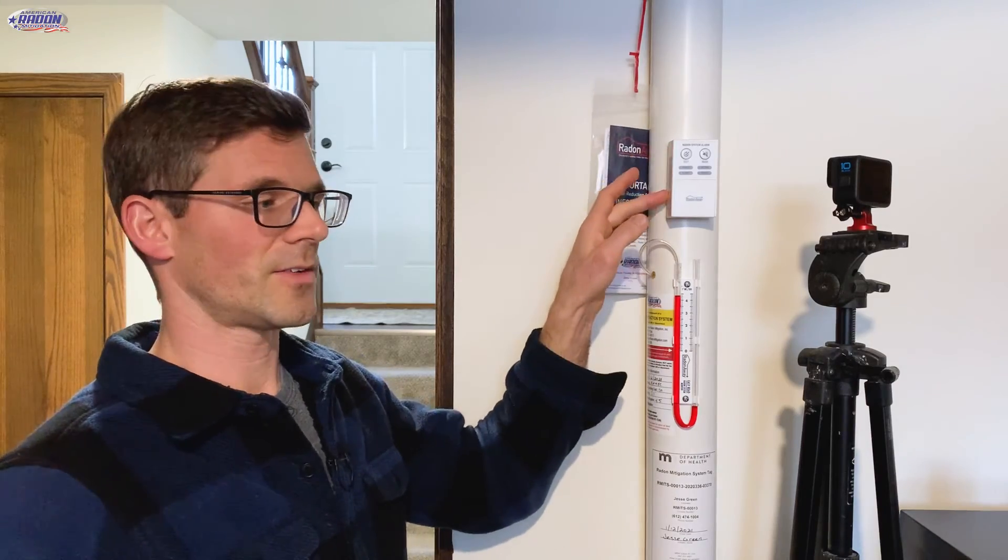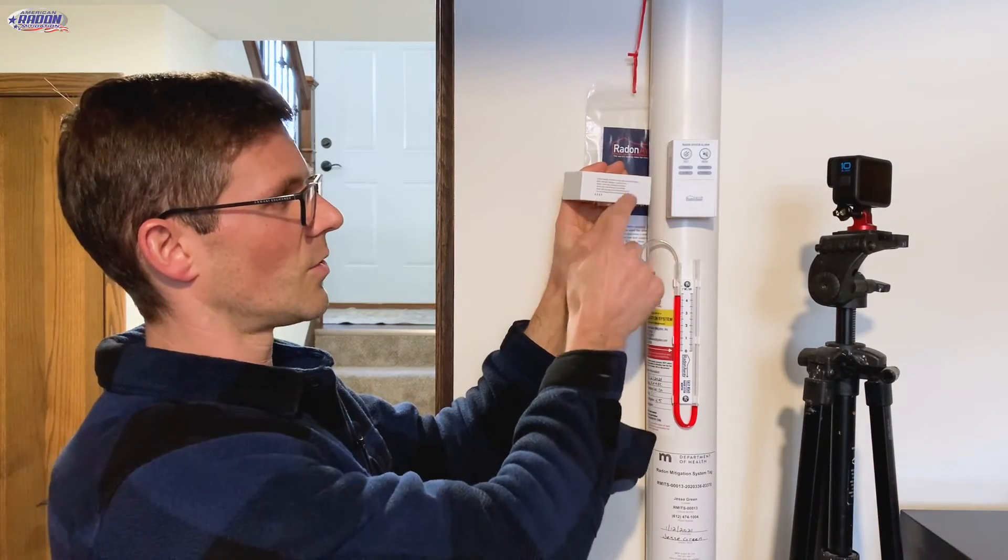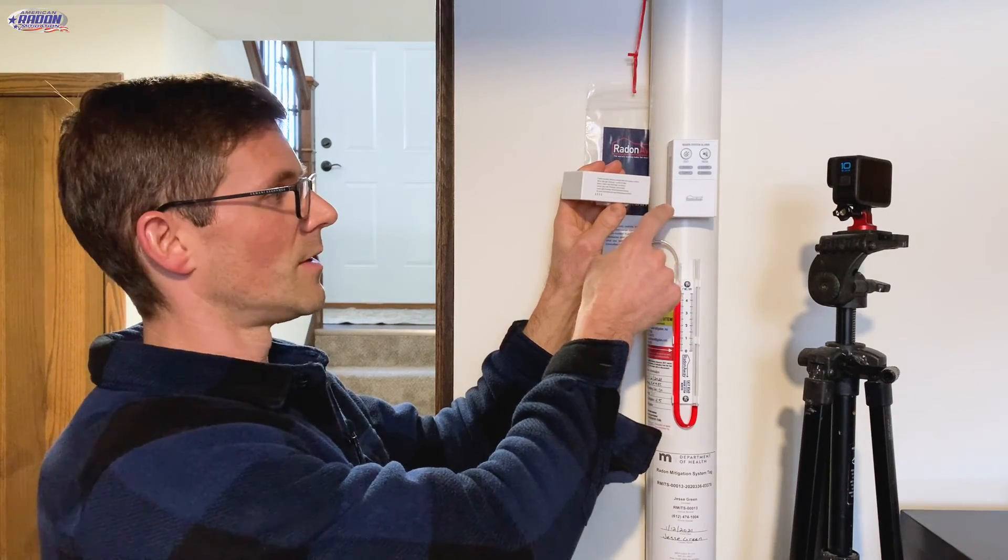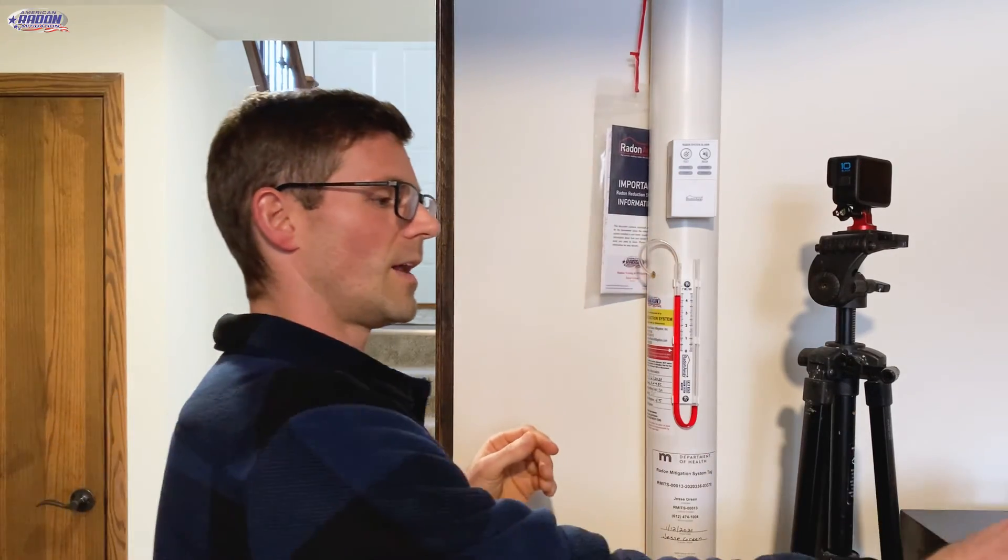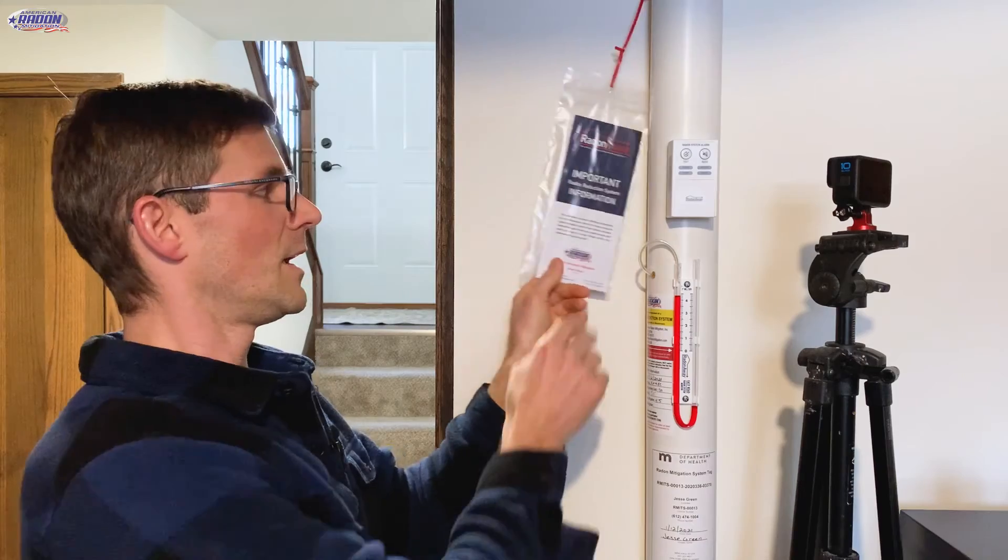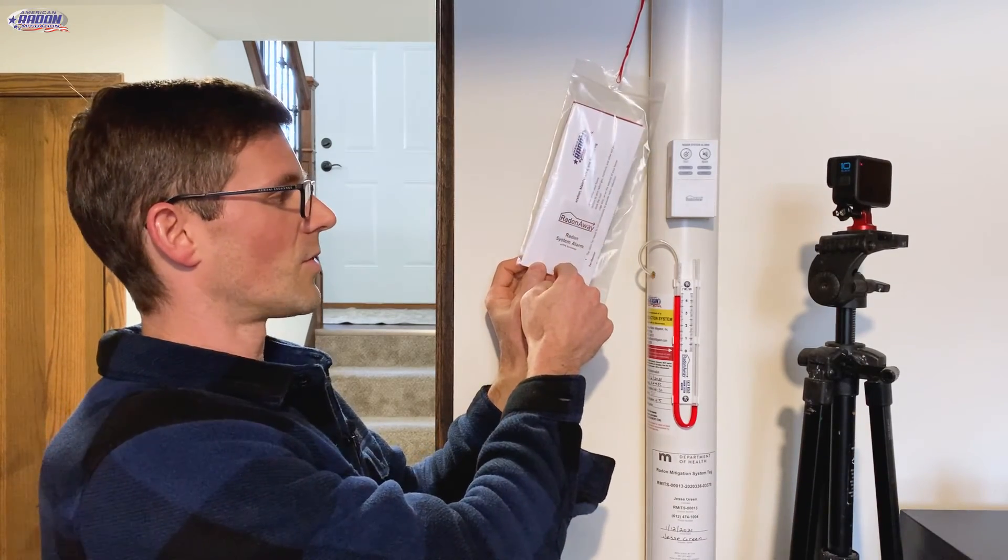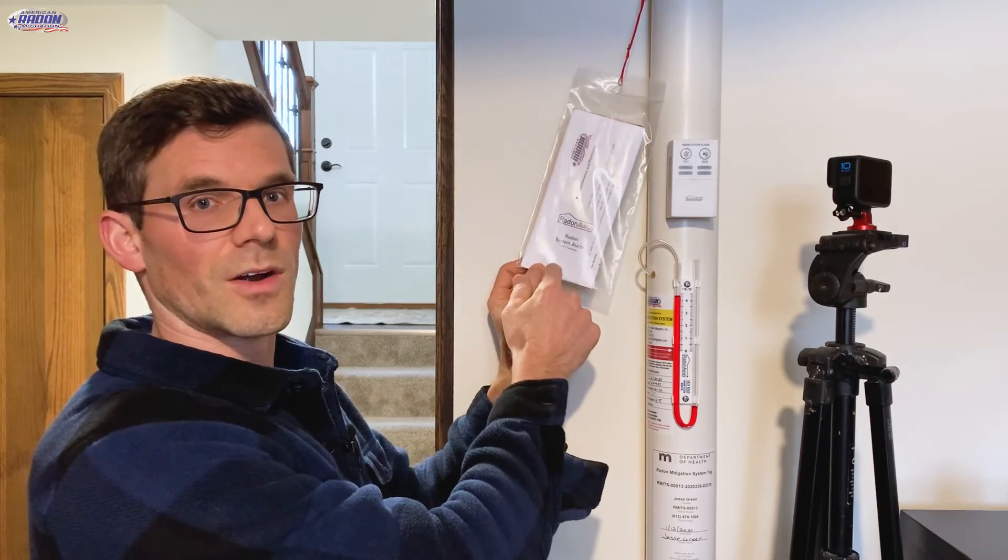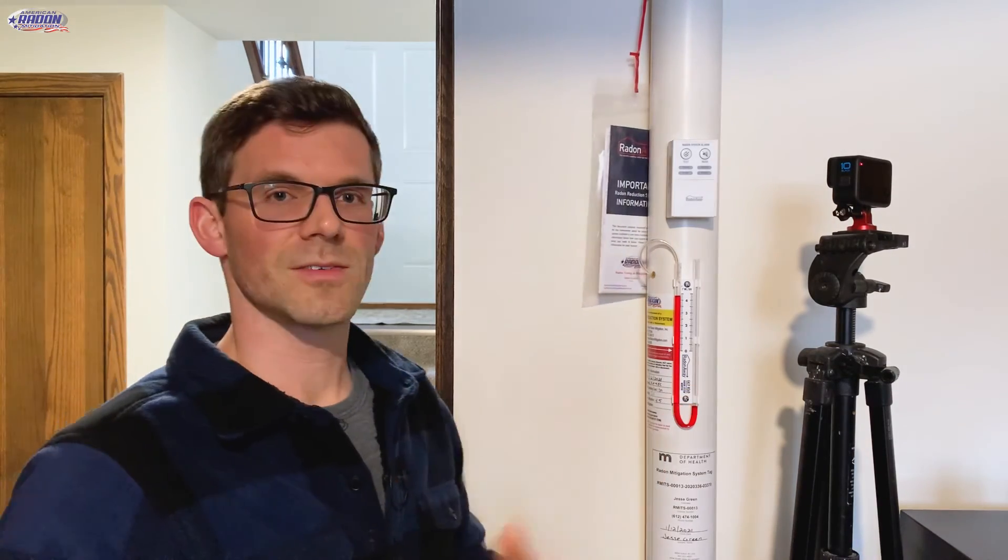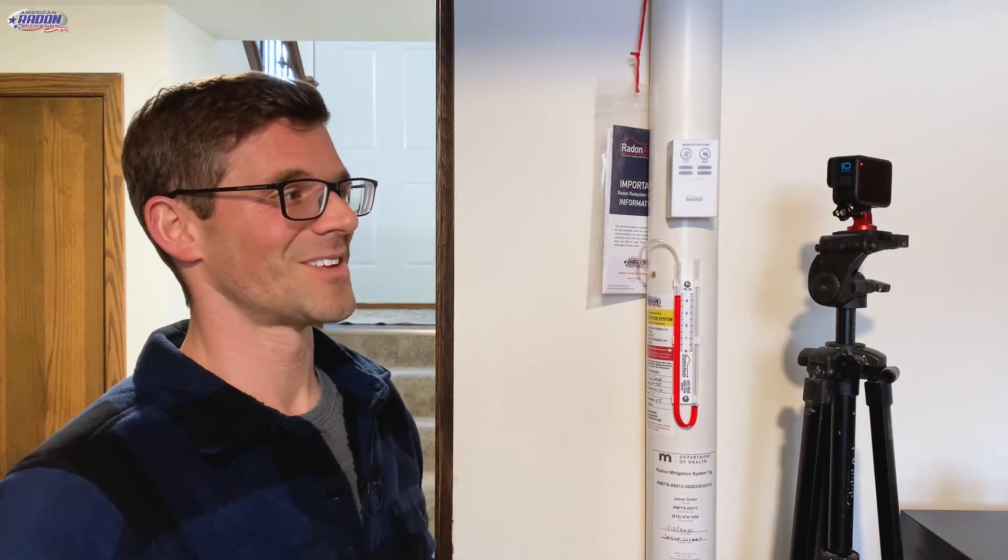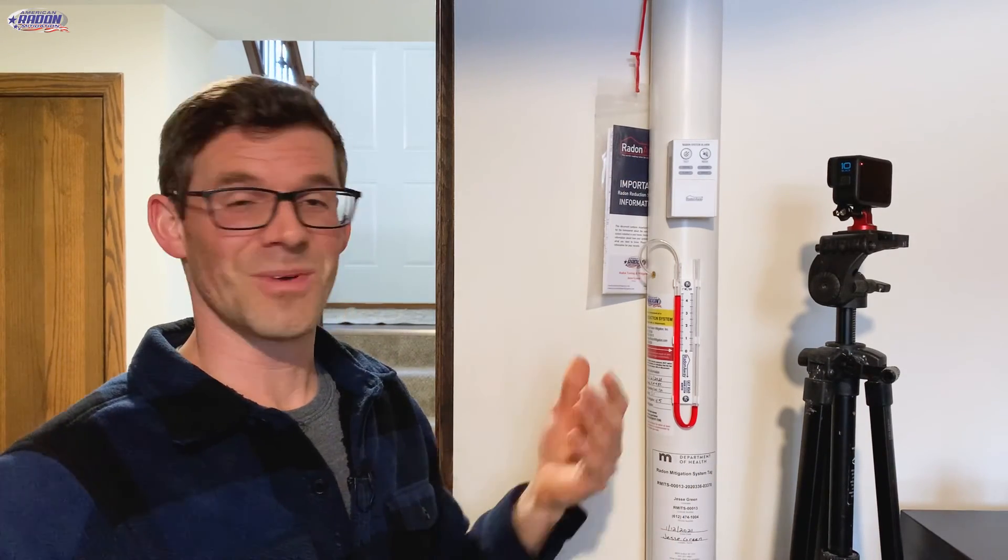Also, one thing on the side of this alarm, it's got words that tell you exactly what those different lights mean. And if we installed your radon system, in your information packet, on the back of it, there's going to be the owner's manual for this alarm, and you can refer to that in case I missed something, which I probably did, because that's a lot to remember. There's a lot of features to this, and I've been installing them for two years, and I still don't know all of them.